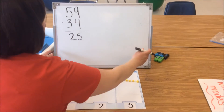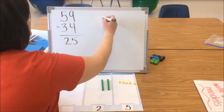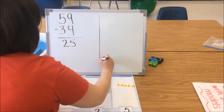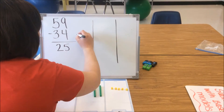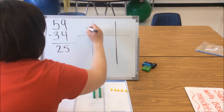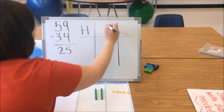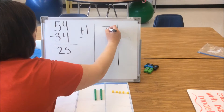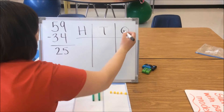Now we're going to show how students can model using a drawing. They start with what's called their HTO chart — the H standing for hundreds, the T standing for tens, and the O for ones.